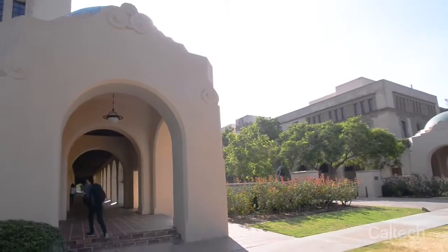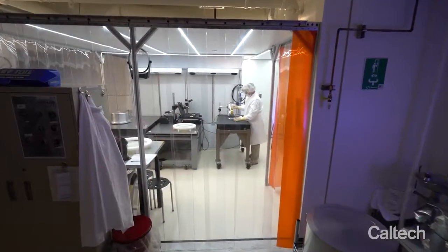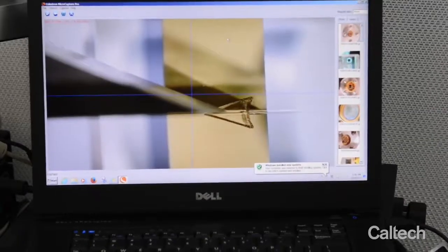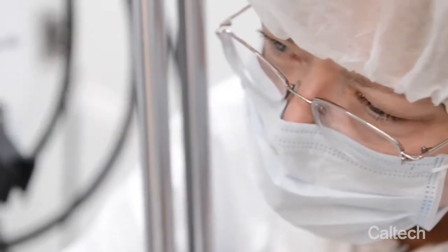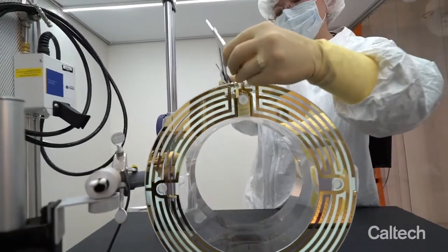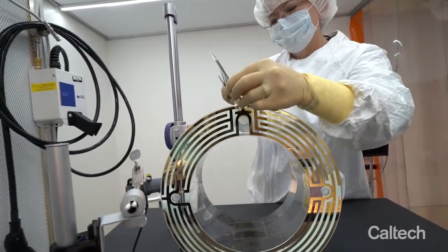LIGO Optics are characterized at Caltech. We want to understand everything we can about the physical characteristics of these amazing objects. Knowing their physical dimensions helps us to install them in exactly the right position in the interferometer.